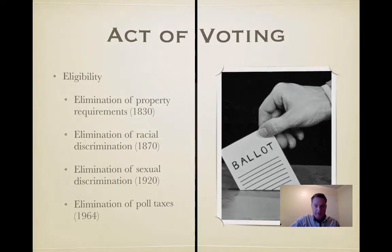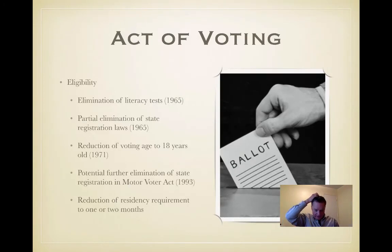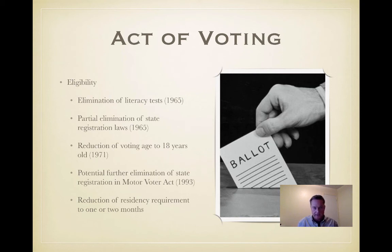Following that, there was the elimination of literacy tests in 1965, which was invalidated by the Voting Rights Act of 1965. There was also a partial elimination of state registration laws, also due to the Voting Rights Act of 1965. Then six years later, the voting age was reduced to 18 with the passage of the 26th Amendment.